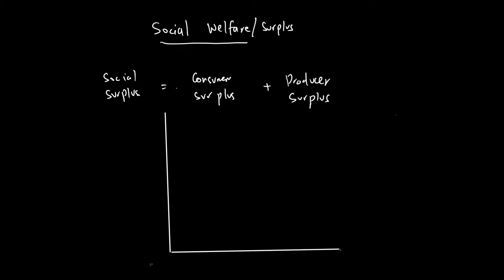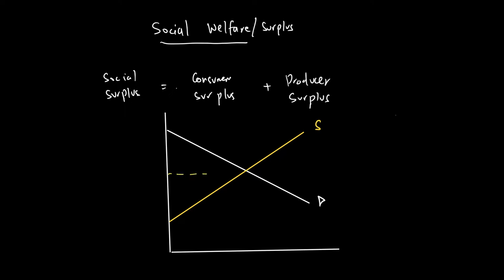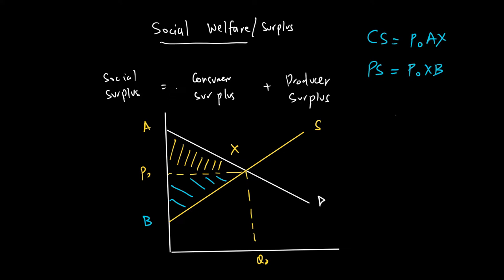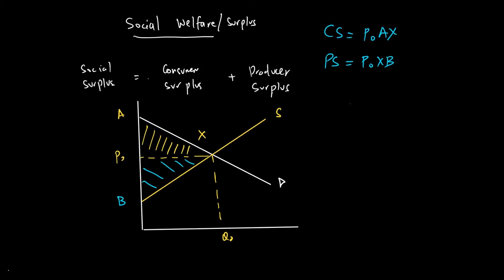How would we achieve that? Our demand curve is downward sloping and our supply curve is upward sloping. Consumer surplus is the area under the demand curve above the market price. Where demand and supply meet, the market price is P0 and the quantity is Q0. Consumer surplus is area AXP0 and producer surplus is area BP0X. This is the maximum surplus that consumers and producers can get.